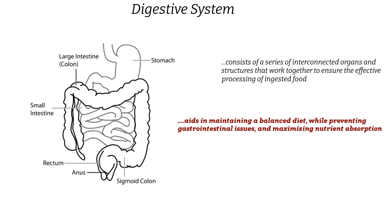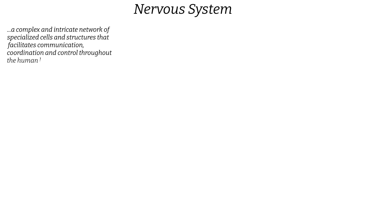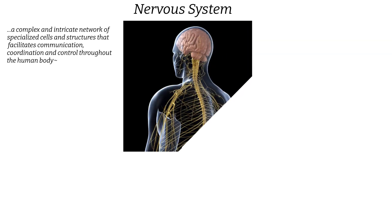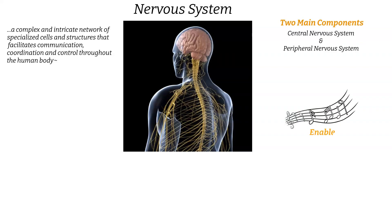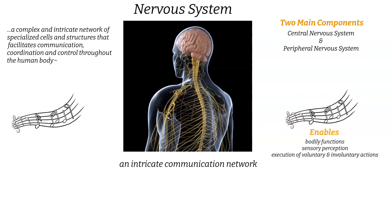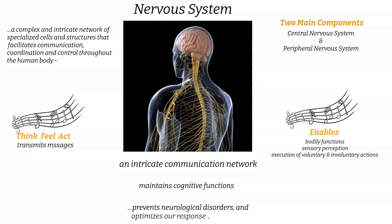Next up, the nervous system — a complex and intricate network of specialized cells and structures that facilitates communication, coordination, and control throughout the human body. It is broadly divided into the central nervous system and the peripheral nervous system, which together enable bodily functions, sensory perception, and the execution of voluntary and involuntary actions. Like the internet relaying information worldwide, our nervous system transmits messages enabling us to think, feel, and act.